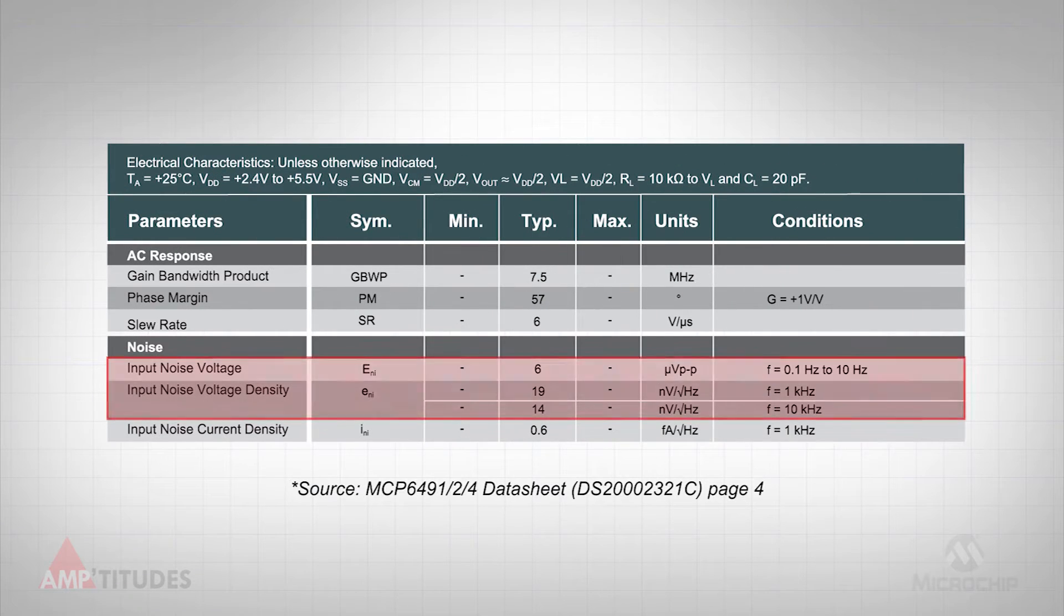In most cases, manufacturers will tout the voltage noise specification of an operational amplifier when discussing noise. Although this is an important specification, it is not the only one in terms of noise. Current noise may be a bigger concern.